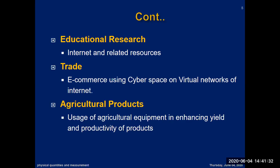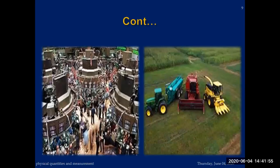Agricultural products: the use of agricultural equipment in enhancing yield and productivity. Scientists and researchers are planning to get much more production from a very small area of land. Much more improvements and research work is being done in the field of agriculture, and this is done with the help of physics.